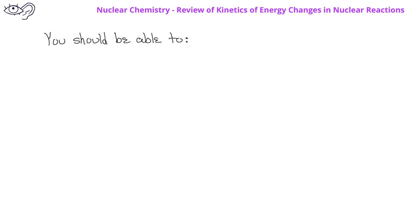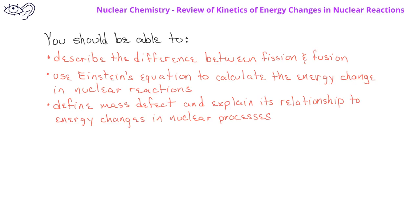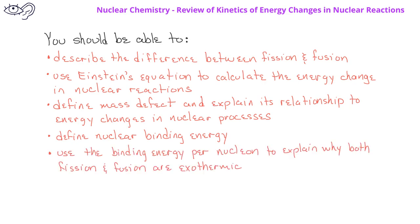After watching this video, you should be able to describe the differences between fission and fusion. You should be able to use Einstein's equation to calculate the energy change in nuclear reactions. You should be able to define mass defect and its relationship to energy changes in a nuclear process. You should be able to understand and define nuclear binding energy. And finally, you should be able to use the binding energy per nucleon to explain why both fission and fusion are exothermic processes.